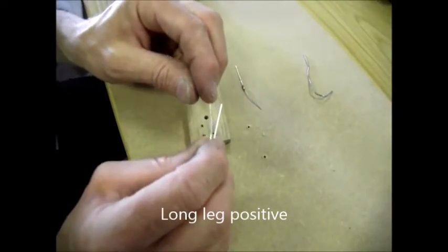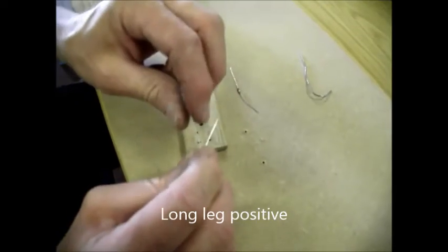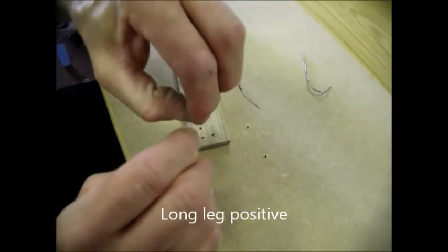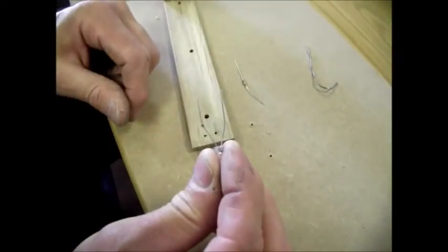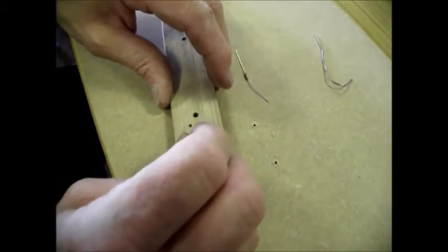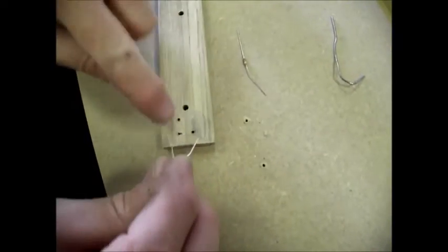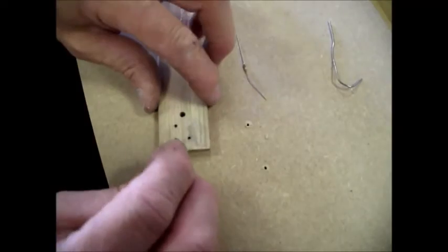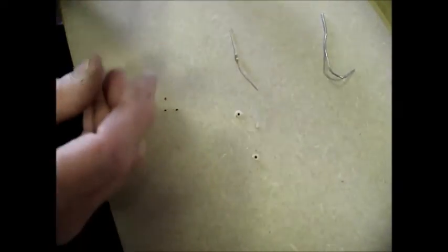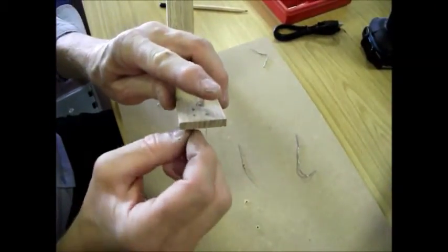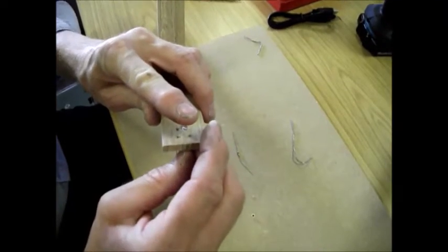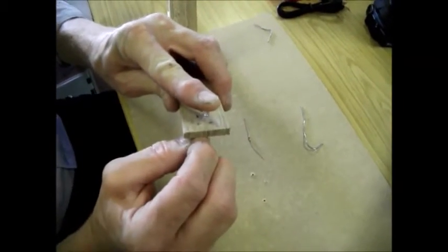So pull the legs apart and then bend them like that. They'll go through two of those holes. Now put the long leg through the hole that's nearest to the other one. You'll see why in a minute. Poke them through like that. Don't worry about bending those or anything on the other side, we'll cut those off later. So that's where our LED is going to go.